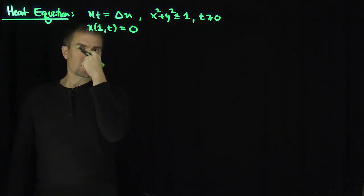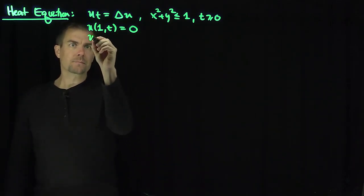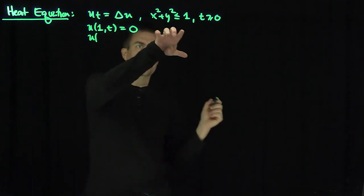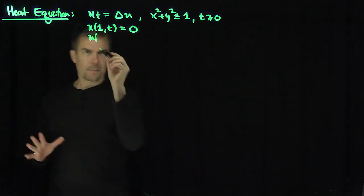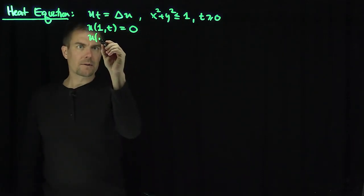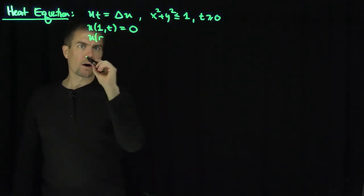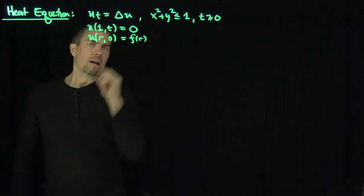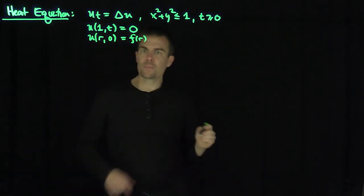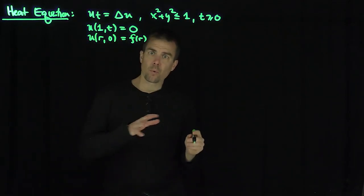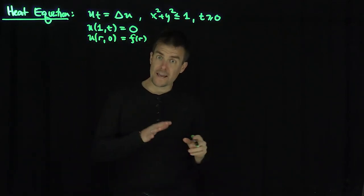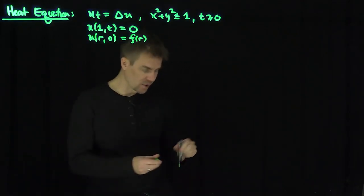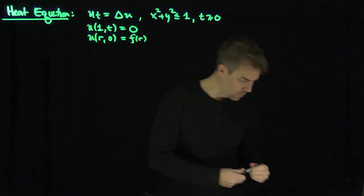We give some initial conditions: u depending on r at time 0 is some function f of r. We assume that when we put this into polar coordinates, there's no angular dependence on the heat distribution. So that's an assumption we make in this problem.